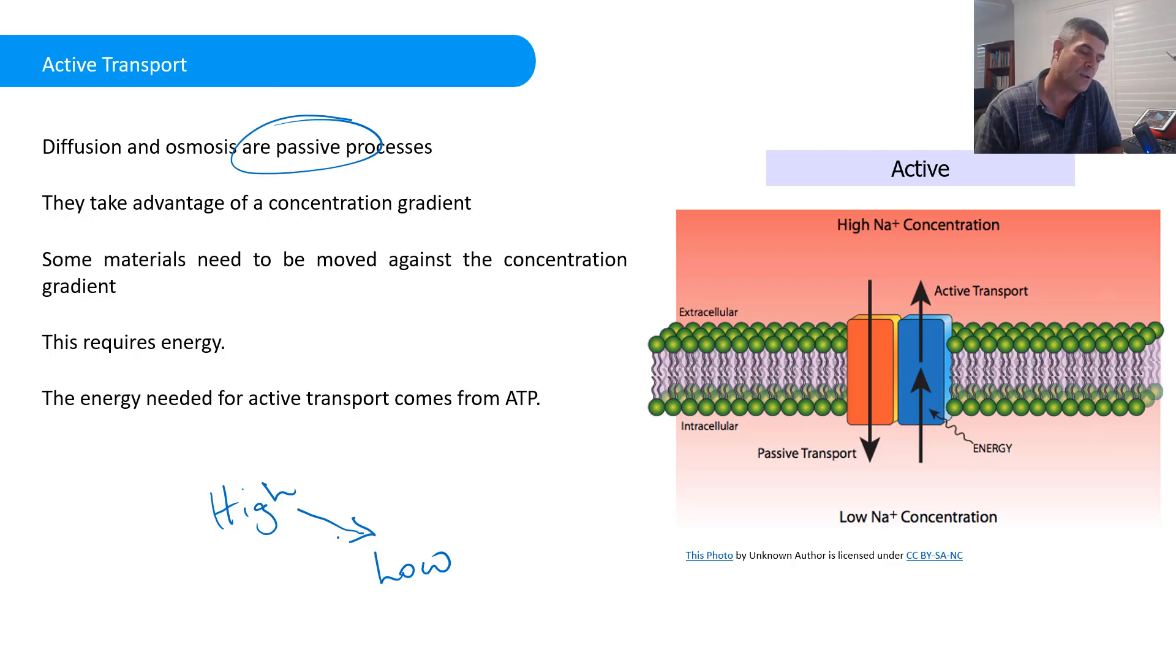They take advantage of that concentration gradient. But unfortunately, some materials need to be moved against the concentration gradient. And this requires energy. And the most important thing that we need to be aware of when we're looking at energy requirements is that the energy to do work in cells comes from this very important ATP molecule.